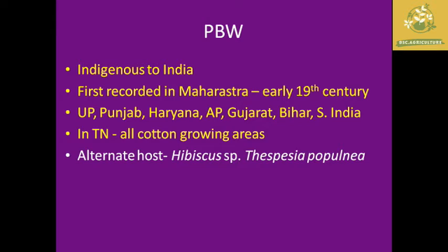The pink boll worm (PBW) is indigenous to India, with the first record found in early 19th century Maharashtra. It is now found in Uttar Pradesh, Punjab, Haryana, Andhra Pradesh, Gujarat, Bihar, and southern parts of India. In Tamil Nadu, all cotton-growing areas are mainly affected by pink boll worm. Alternate hosts are Hibiscus species and Thespesia populnea.